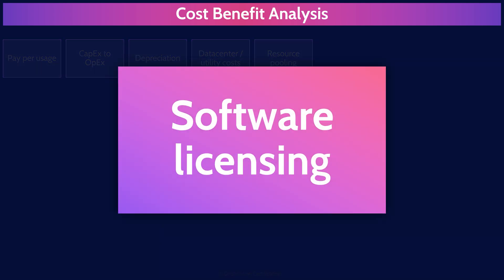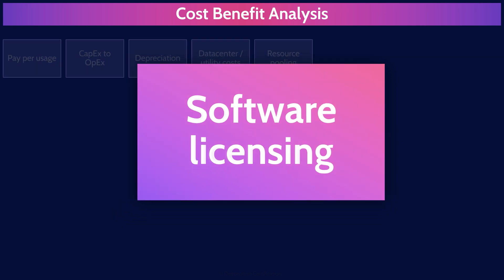Software licensing. Traditional software licensing often requires large upfront costs, whereas cloud-based services typically follow a subscription model, allowing organizations to scale and pay for only what they need. Watch out though, as software licensing costs in the cloud can be very different from on-premise licensing costs for the same software. Some organizations have faced significantly higher licensing costs when they lifted and shifted systems into the cloud.